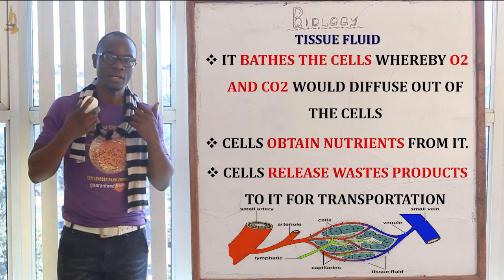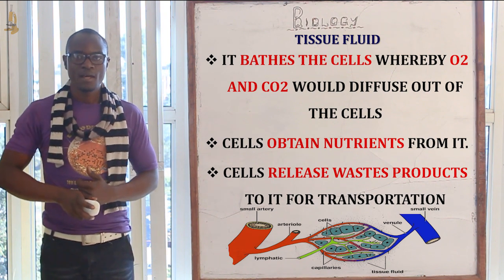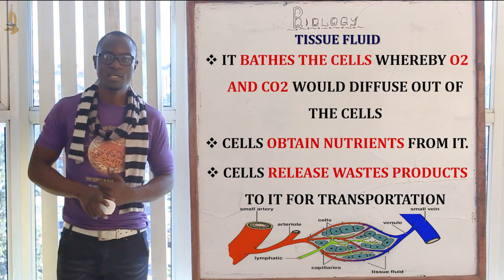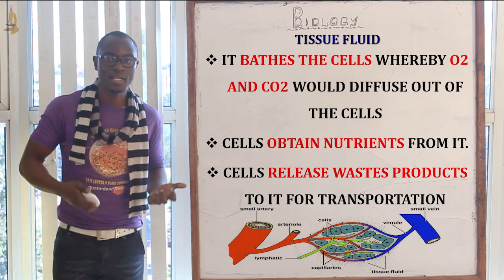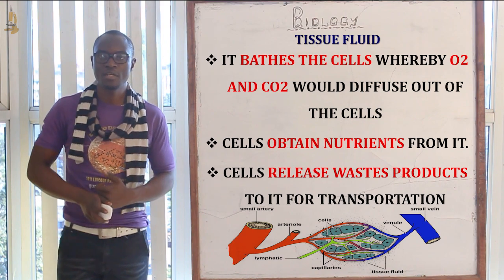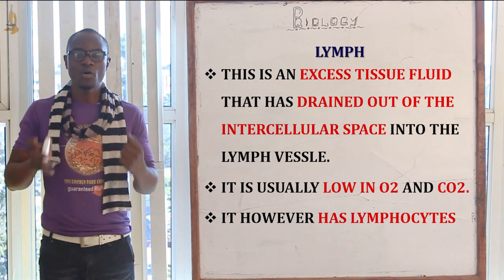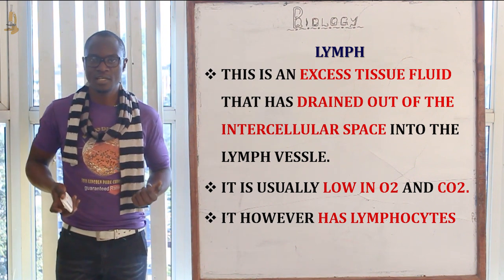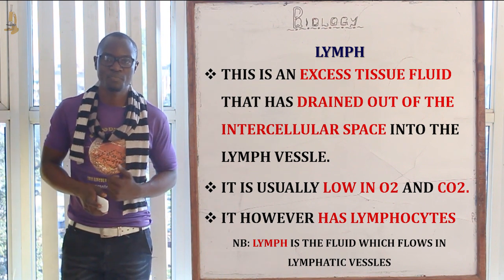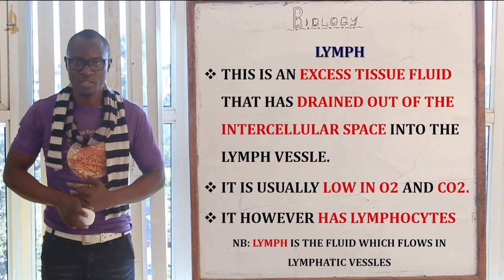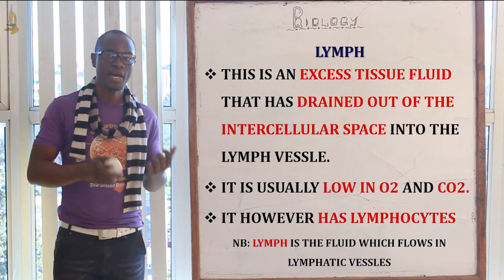Cells also release their waste products for transportation in the tissue fluid. Additionally, the tissue fluid supplies all cells and tissues with different nutrients. Now let's look at the lymph. Lymph is excess tissue fluid that has filtered out of the intercellular air spaces into the lymph vessels. The lymph is usually low in oxygen and carbon dioxide as compared to the blood.